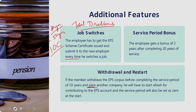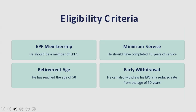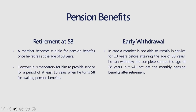When looking at EPS specifically, it is governed by four cardinal principles: EPF membership — he should be a member of EPFO; minimum service — he should have completed 10 years of service; he should have reached the age of 58, the retirement age; and he can also withdraw his EPS at a reduced rate from the age of 50. These are the core eligibility criteria which mark the execution of the EPF scheme.